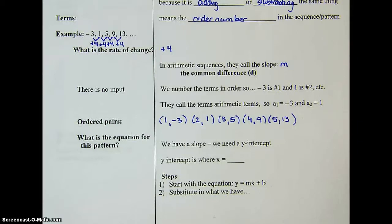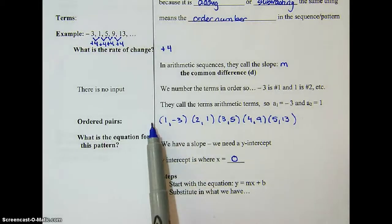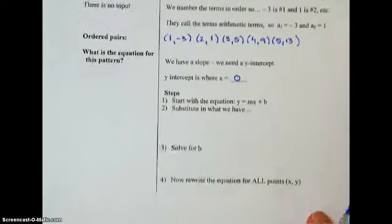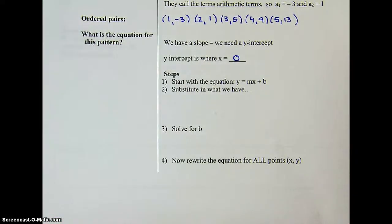We need to figure out the pattern for this equation just like we did before — and wait, we have points now. So we could find the slope and then find the y-intercept, just like we did the last few days. The y-intercept is where x equals 0, meaning we need to know where this sequence started. We already know the change is 4, so all we really have to do is substitute in what we have, solve for b, and get the pattern.